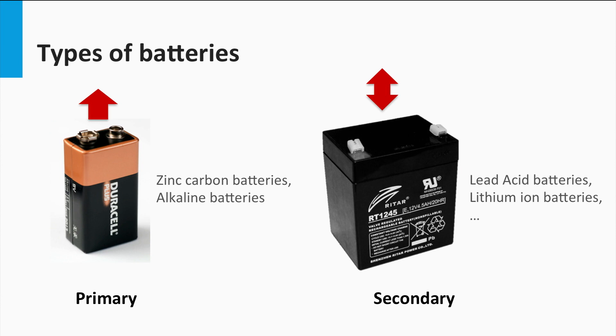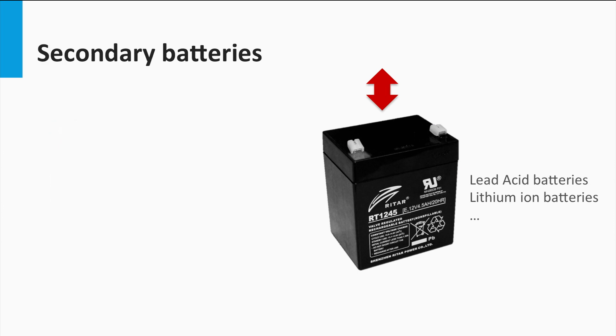They can recharge when the chemical reaction is reversed using an overpotential. In other words, the excess electrical energy is stored in these secondary batteries in the form of chemical energy. Examples include lead-acid batteries and lithium-ion batteries. It is the secondary batteries that we are interested in to explore as a possible storage option.